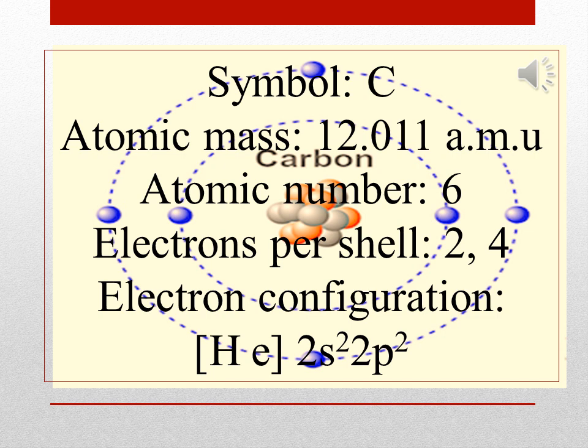Carbon, symbol C, atomic mass 12.011 AMU, atomic number 6, electrons per shell 2, 4, electron configuration helium 2S2 2P2.